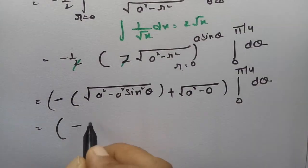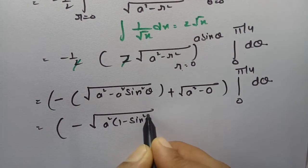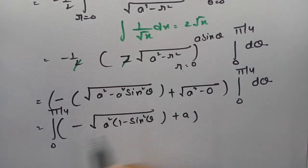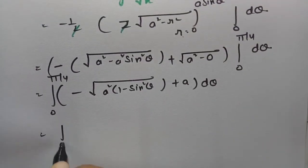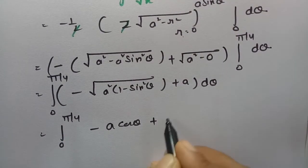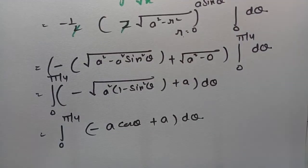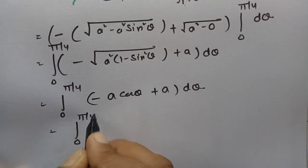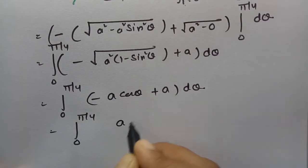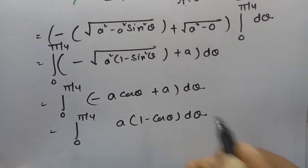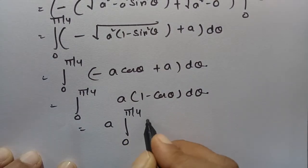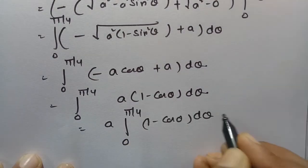If I take a squared common from the square root term, this gives root of 1 minus sin squared theta which is cos theta. So the expression becomes minus a cos theta plus a, integrated from 0 to pi by 4 into d theta. If I take a common here then this will be a times 1 minus cos theta, into d theta. So now I have to integrate: a times integral 0 to pi by 4 of 1 minus cos theta, into d theta.